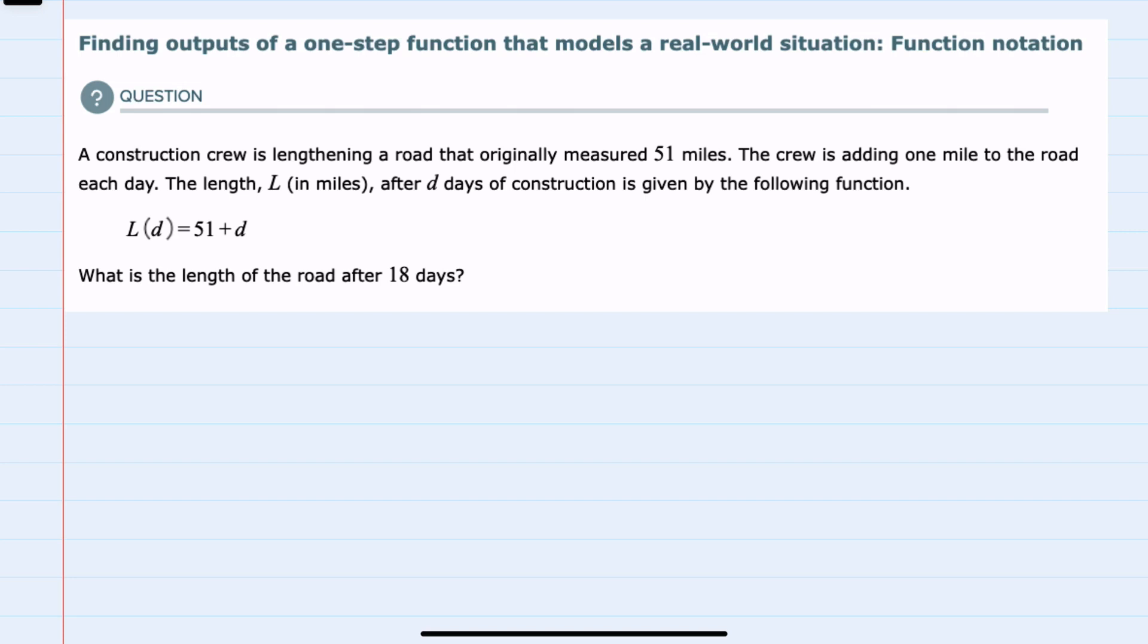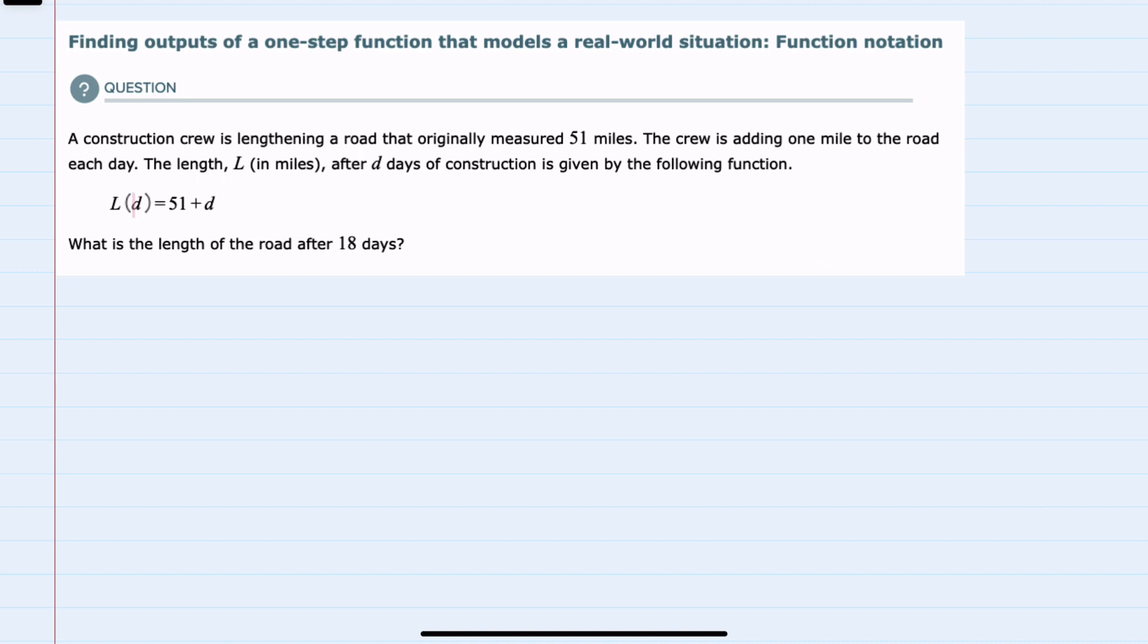The length, L here, in miles after d days of construction is given by the following function. So the length of the road is a function of the number of days of construction, and that function can be calculated by taking 51 plus the number of days.